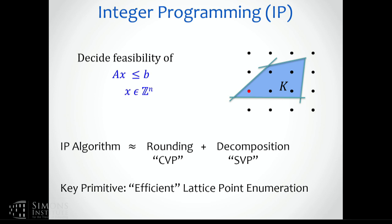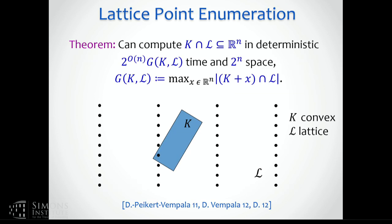The key primitive behind both of these steps is an efficient way of enumerating lattice points. This tool is something many people don't know, and it's useful to have. You have a convex set and a lattice — don't worry about how the convex set is represented; essentially any way you can represent this set usually works. Your goal is to compute all the lattice points inside.